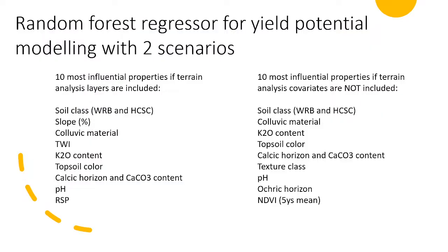A random forest regressor was then used to predict the yield potential, and the most influential properties are presented for two scenarios: one using the DEM-based covariates and one without. For both scenarios, soil classification units are major descriptors, appearing in more than 50% of both cases. Besides those, some soil chemical, physical, and morphological properties appear, along with DEM-related covariates such as slope, TWI, or RSP. Surprisingly, none of the soil scanning results appear among the top classifiers, although these are one of the most common techniques nowadays to describe in-field variability.